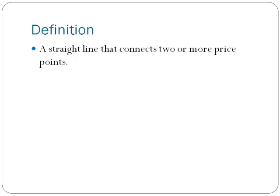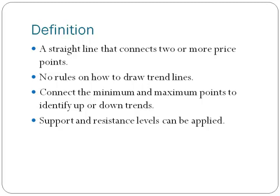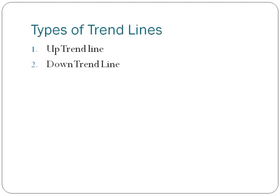What is a trend line? A trend line is one of the most important tools for technical analysis. It is a straight line that connects two or more price points. There are no rules on how to draw trend lines — one has to connect minimum points and maximum points to identify upward or downward trends. Support and resistance levels can be applied to trend lines. There are two types of trend lines: the uptrend line and the downtrend line.